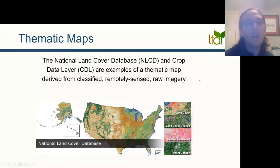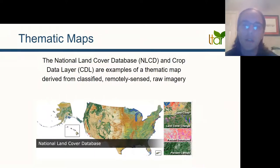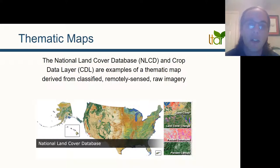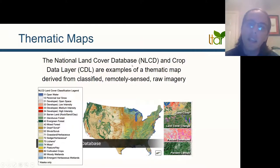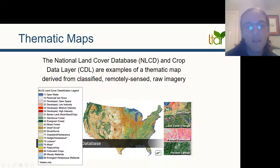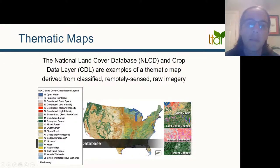Thematic maps are the type we'll be most interested in for today's example. The most well-known thematic map is probably the National Land Cover Database (NLCD). Today we're using what's called the Crop Data Layer (CDL); I mentioned the NLCD because it's more common. These are derived from remotely sensed data, usually from the Landsat satellite, to determine crop data layer information. The NLCD categories represent different land cover types across the entire US — I didn't show the CDL here because it has over a hundred categories.